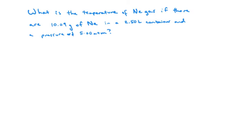Here's one for you to try. It says what is the temperature of neon gas if there are 10.09 grams of neon in a 2.50 liter container at a pressure of 5.00 atmospheres? Make sure you note here that the grams of, this is grams of neon, not moles. So you'll need to convert this to moles to plug it into PV equals NRT. So give this one a try.